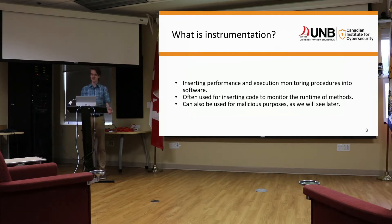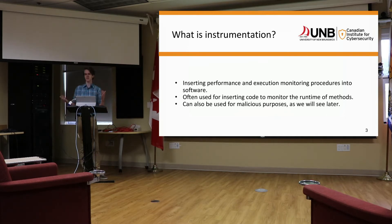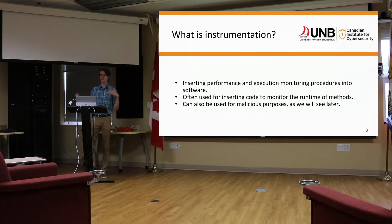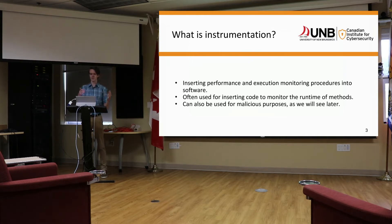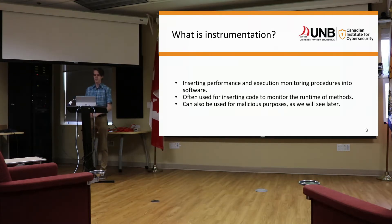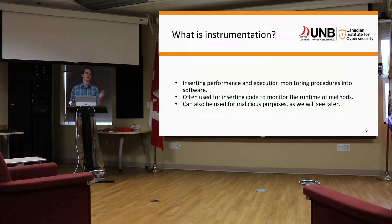Instrumentation is essentially inserting performance or execution monitoring code into an existing Java process. It's often used for monitoring the length of execution of methods, usually for performance or software that requires very performance-heavy computation. For example, if you're doing something like Bitcoin mining and calculating SHA-256 a lot, you want to know exactly how long it takes to do one round of SHA-256. Instrumentation can be used for those legitimate methods, but it can also be used for illegitimate methods like hacking.